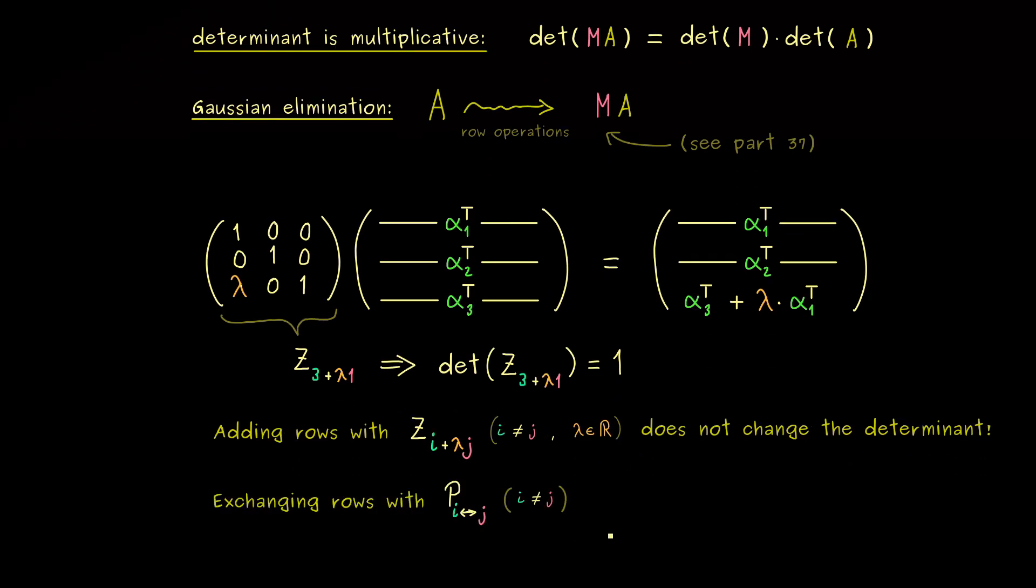Ok, but at this point, you might ask, what happens if we use the row operations given as exchanging rows. This is also something we have used and learned in the Gaussian elimination, and we have called these matrices P.